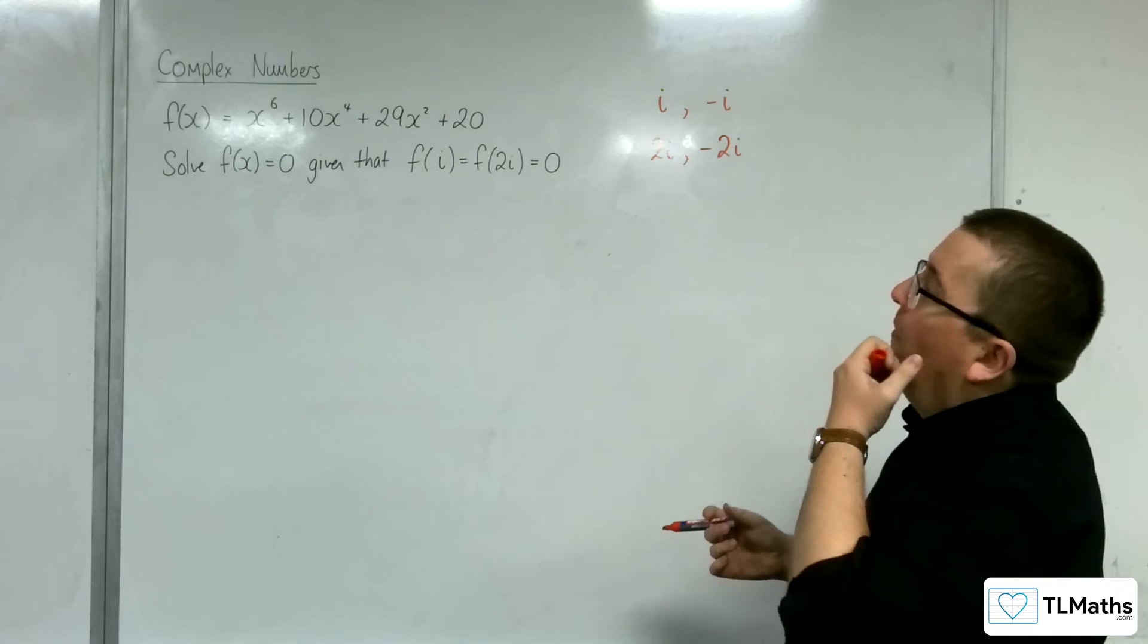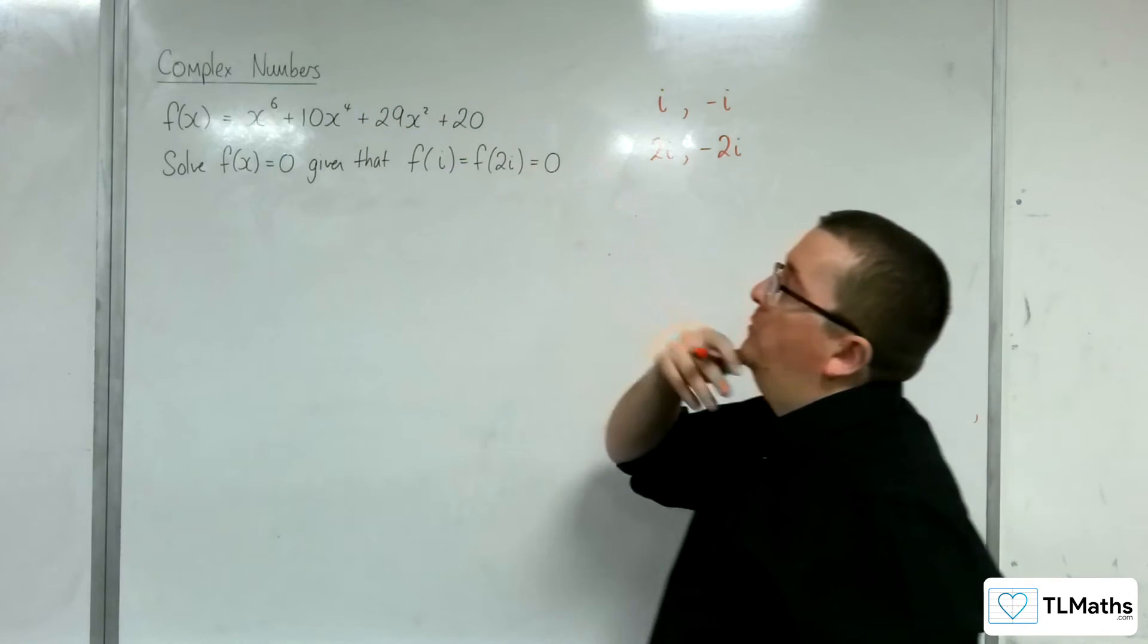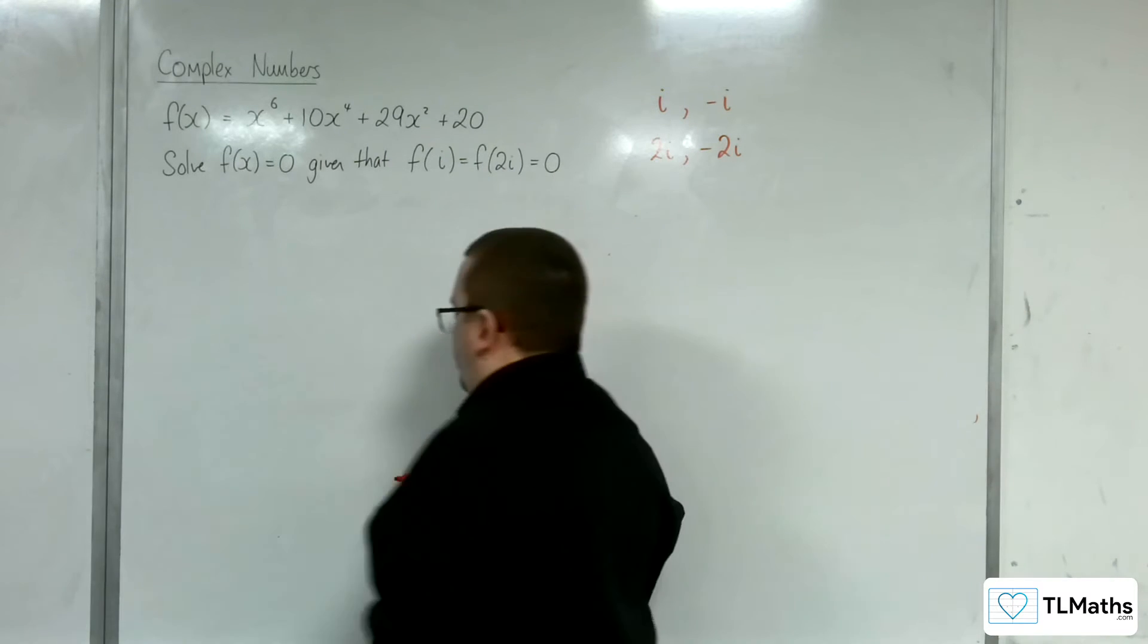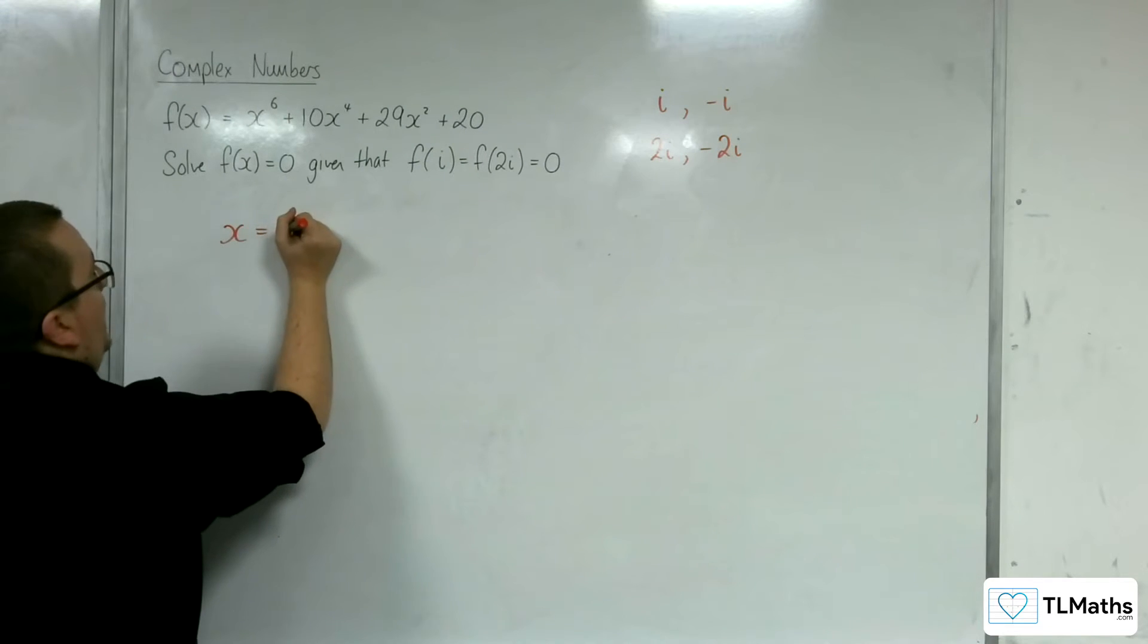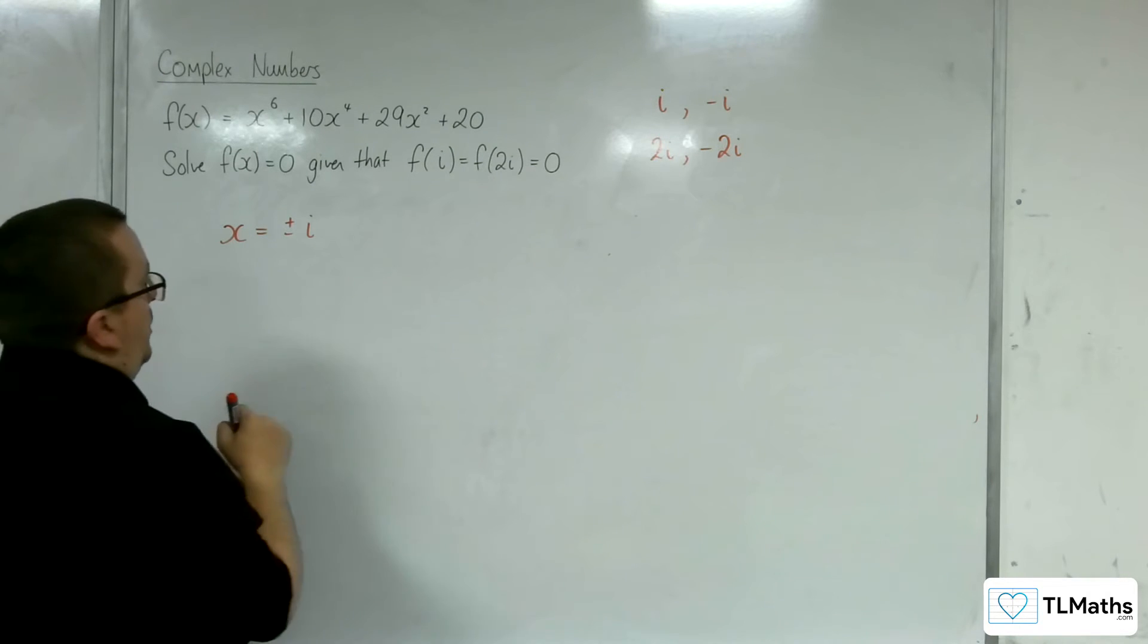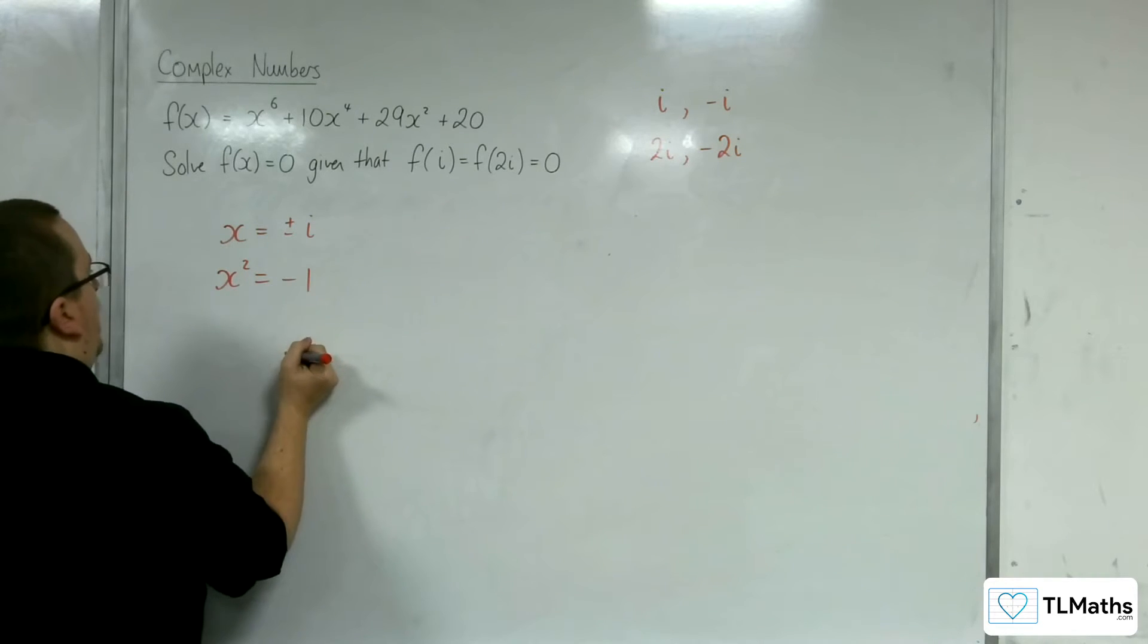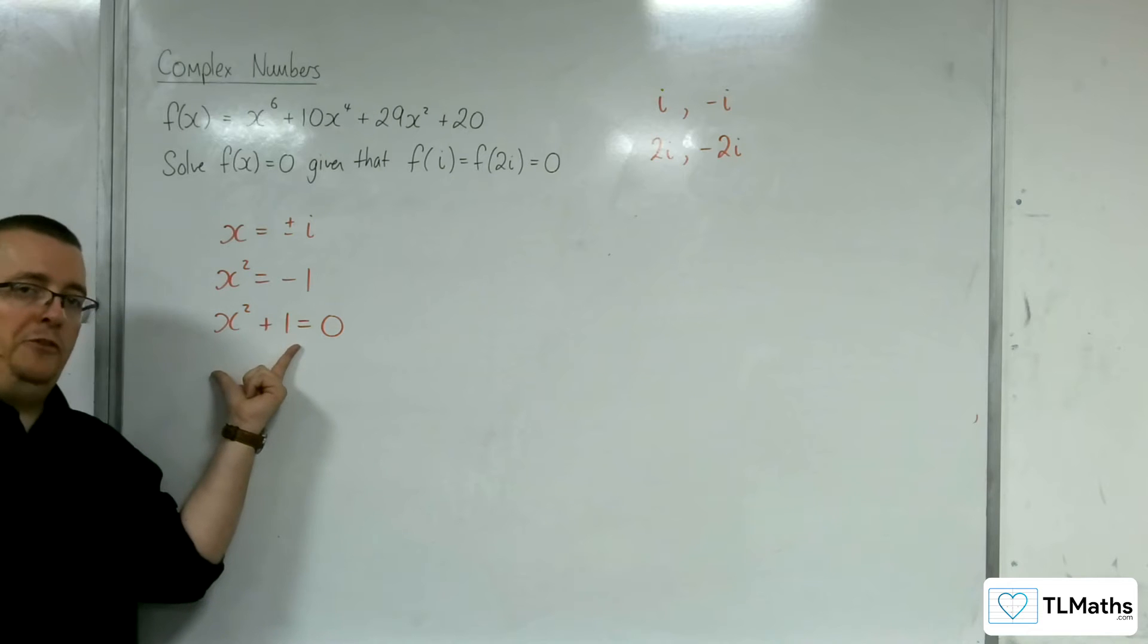So actually, I've already got 4 of the solutions. My job is to work out what the other 2 are, because this is a polynomial of degree 6, so I would be expecting 2 more solutions. So the fact that I know that x equals i, or x equals plus or minus i rather, are solutions, means that if I square both sides, then I get x squared is equal to negative 1, and so x squared plus 1 equals 0. So that means that x squared plus 1 must be a factor.